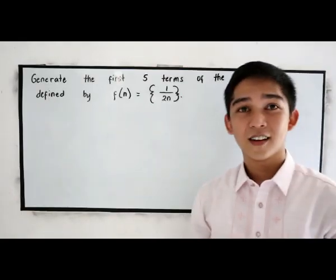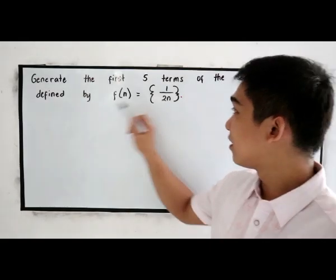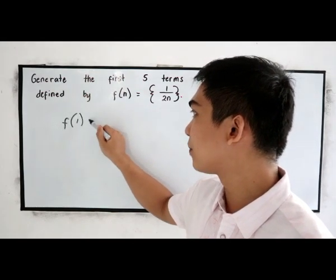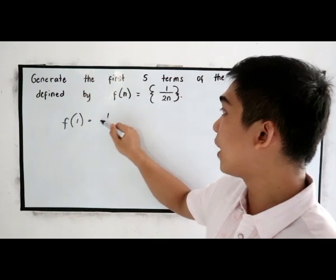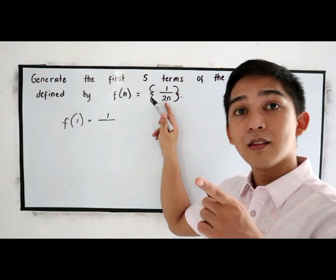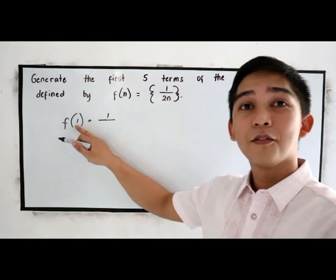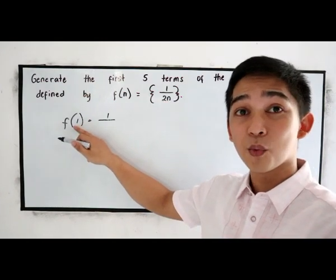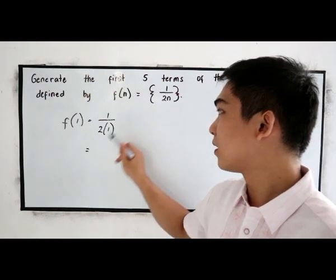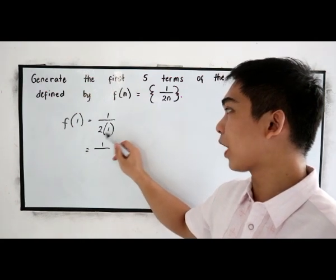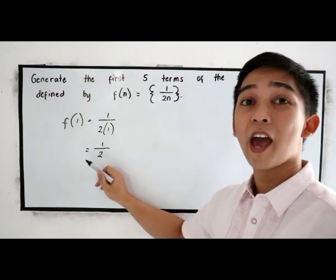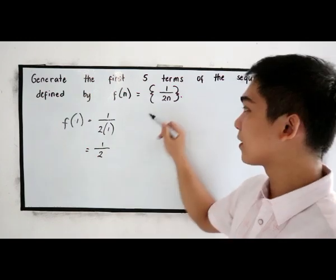So let's solve. So if we have the first term, or the f(1), is equal to 1 over, just substitute n to our value of n. In this case, 1. So 2 times 1. So 1 over 2 times 1, which is 2. This will be our f(1), or the first term.